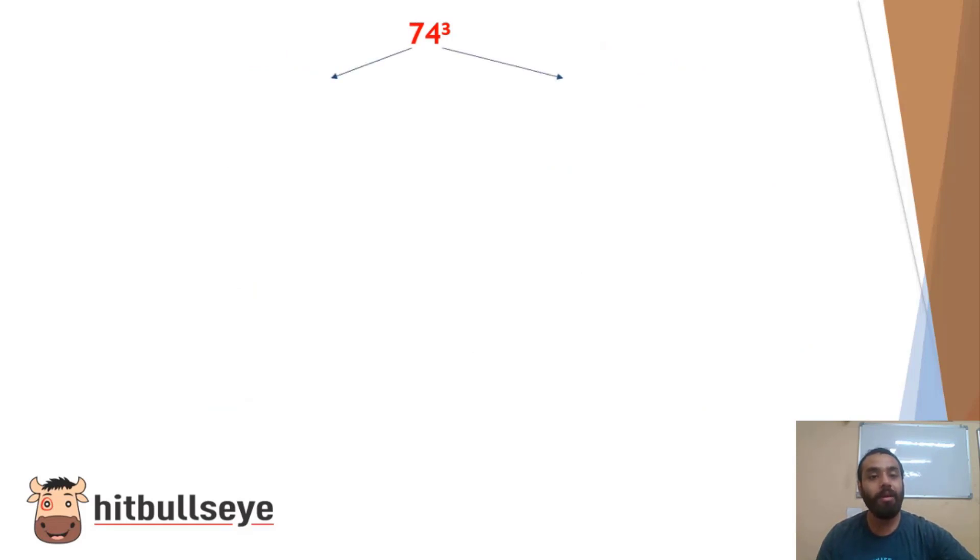So 74 cube. We are divided into two parts. So 7 cube is 343 and 4 cube is 64. Applying the same concept, we have 7 square multiplied by 4 multiplied by 3. Similarly, we have 7 multiplied by 4 square multiplied by 3.